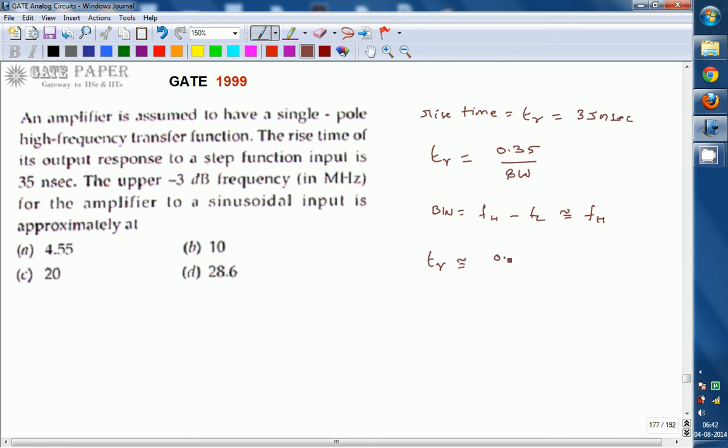So TR is approximately equal to 0.35 divided by FH, upper cutoff frequency. From this, we get upper 3 dB frequency FH equals 0.35 divided by TR.